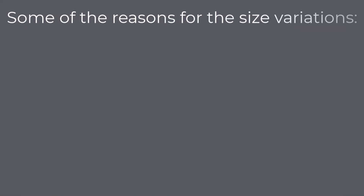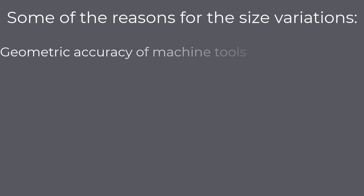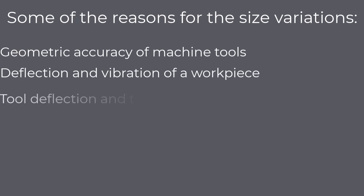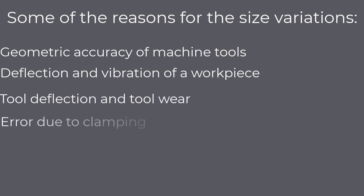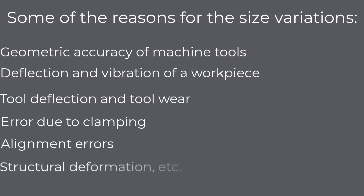Some of the reasons for size variations include: geometric accuracy of machine tools, deflection and vibration of a workpiece, tool deflection and tool wear, error due to clamping, alignment errors, structural deformation, etc. As we can see, there are many reasons why manufactured component dimensions could differ from the dimensions defined on the drawing.